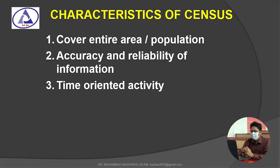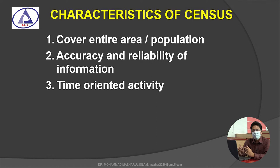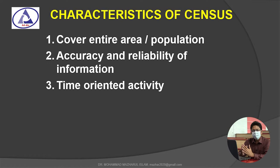Let us discuss about the characteristics of census. Number one: it covers the entire area or population — all the people of a country will be included. Number two: accuracy and reliability of information — we must ensure that the data collected is accurate and reliable. Number three: time-oriented activity — data is collected at a specified date on a defined time interval.